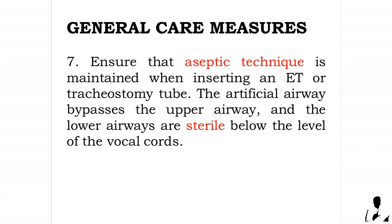Seven: ensure that aseptic technique is maintained when inserting an endotracheal or tracheostomy tube. The artificial airway bypasses the upper airway, and the lower airways are sterile below the level of the vocal cords.